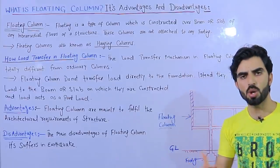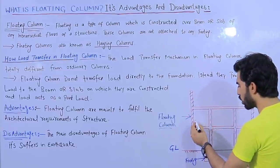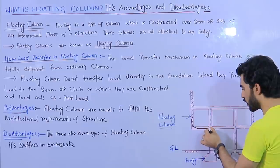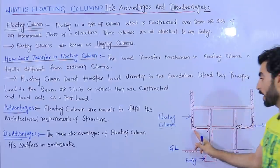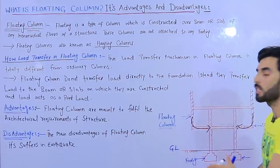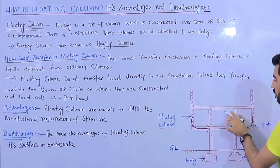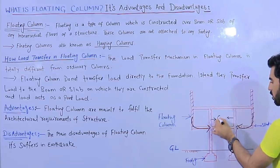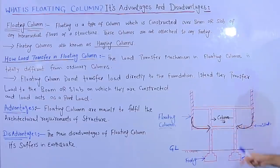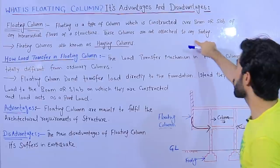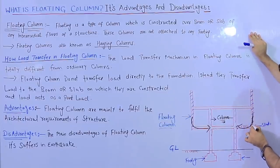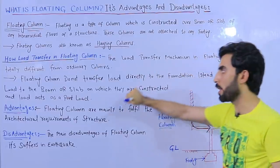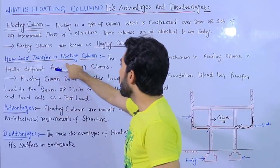Now I will also discuss the load transfer mechanism. The load transfers from the floating column to the main columns, and also the load comes from above. We don't have support for this floating column underneath. The load transfer mechanism is different from normal columns because we don't provide any separate support for the floating column directly to the ground.